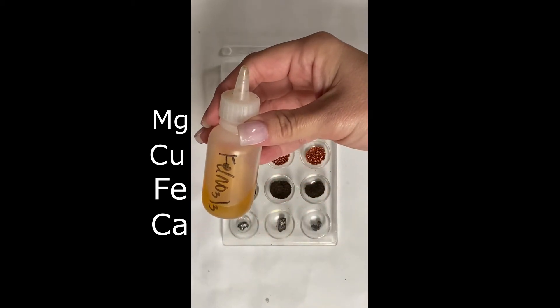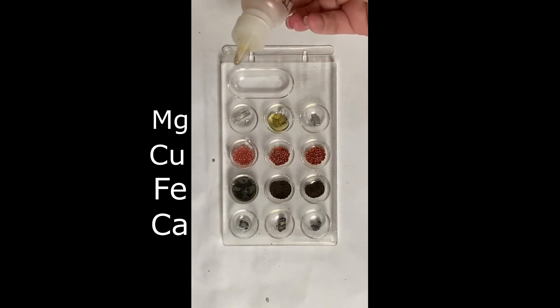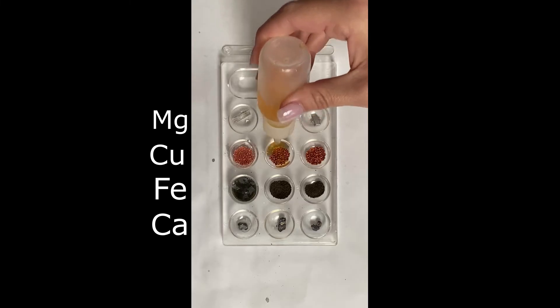Let's go ahead and do our second one. This is going to be iron three nitrate or ferric nitrate, and we're going to go ahead and put a little bit in each well.